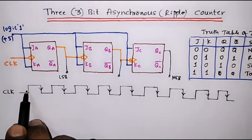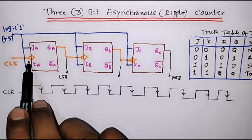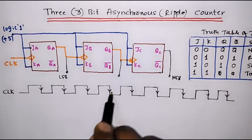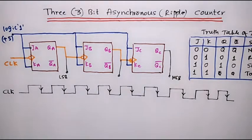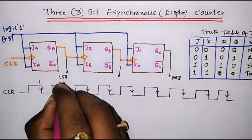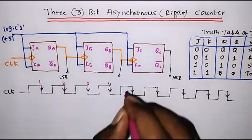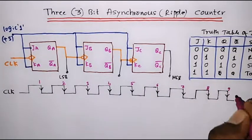This is called the rising edge of the clock and this is called the falling edge of the clock. As we are using falling edge or negative edge triggered flip-flops, I have shown the arrow marks on each falling edge of the clock pulses. This clock is directly applicable to the first flip-flop, and I label the negative edges: first, second, third, fourth, fifth, sixth, seventh, eighth, ninth.